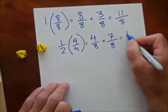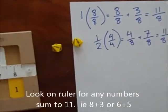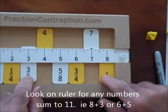Again, I have 11 eighths. Look on my ruler. Two numbers that sum to 11, an 8 and a 3.